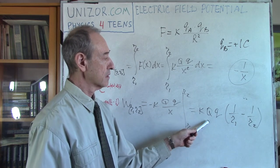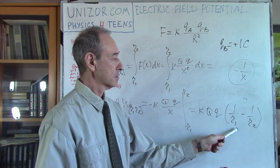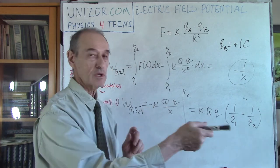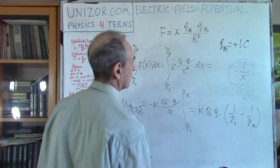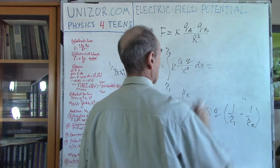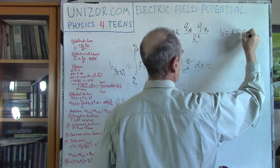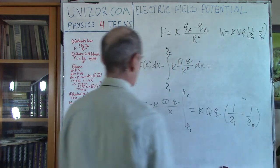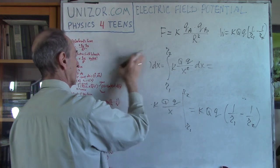So W(R1, R2) = KQq × (1/R1 − 1/R2) is the amount of work needed to move charge q in the field produced by charge Q from distance R1 to distance R2 along the radius. This is for radial movement.